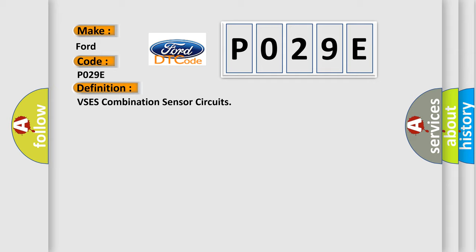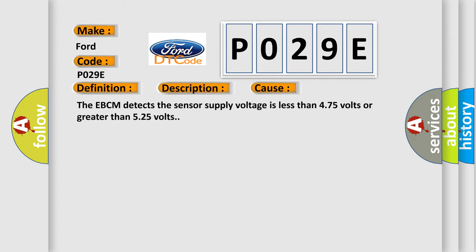And now this is a short description of this DTC code. Ignition voltage is greater than 9 volts. This diagnostic error occurs most often in these cases: The EBCM detects the sensor supply voltage is less than 4.75 volts or greater than 5.25 volts.